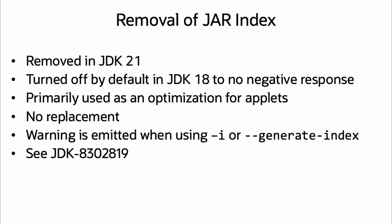The JAR index feature was removed in JDK 21. It was turned off by default with JDK 18, and there was no negative response, leading to its removal in JDK 21. The original intent of the JAR index feature was an optimization for applets, but with applets also on their way out, no replacement will be provided. A warning will be emitted with either -i or --generate-index being used. See JBS issue JDK-8302819 for details.